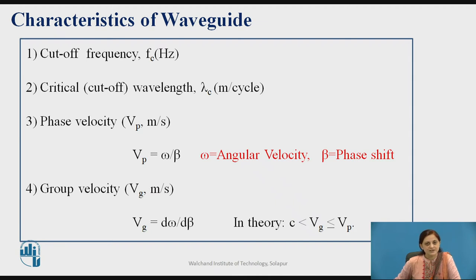Critical wavelength, lambda c: it is the wavelength at which the wave is travelling through the rectangular waveguide. Phase velocity: it is the velocity at which the wave changes its phase. Generally, the phase velocity has a value greater than the group velocity.